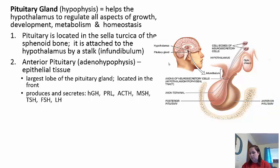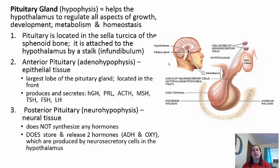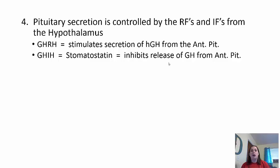The anterior pituitary produces and secretes hormones including human growth hormone, prolactin, adrenocorticotropic hormone, melanocyte-stimulating hormone, thyroid-stimulating hormone, follicle-stimulating hormone, and luteinizing hormone. The posterior pituitary, known as the neurohypophysis, is an extension of the hypothalamus with nervous tissue. It does not make hormones but stores two — antidiuretic hormone and oxytocin — which are produced by neurosecretory cells in the hypothalamus and released when needed. Whether the pituitary releases or inhibits hormones is controlled by releasing and inhibiting factors from the hypothalamus.